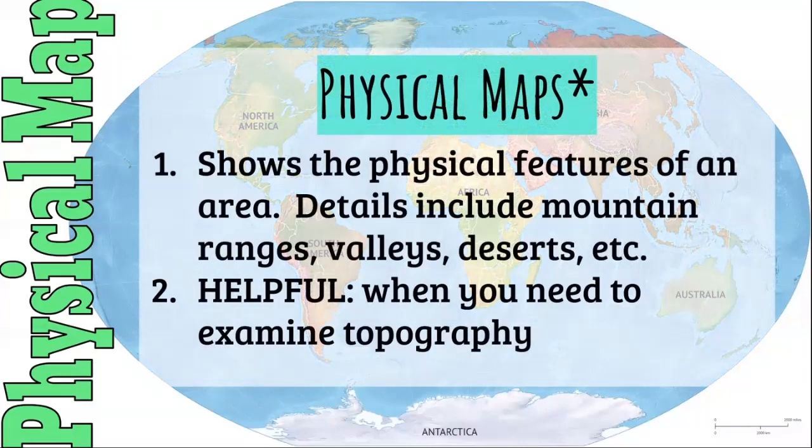Next are physical maps. These show the physical features of an area — details include mountain ranges, valleys, and deserts. Depending on the scale of the map, you can also see lakes, rivers, small tributaries, creeks, and the names of different mountain peaks. This examines a lot of different topography, and on a very close-up map you can see it in very specific detail.